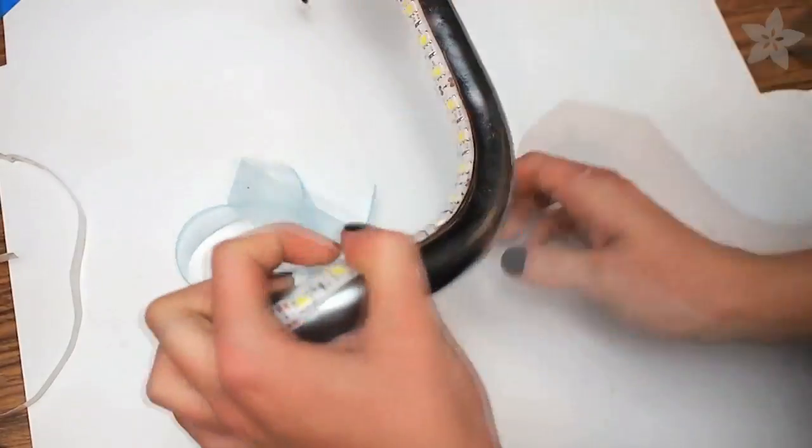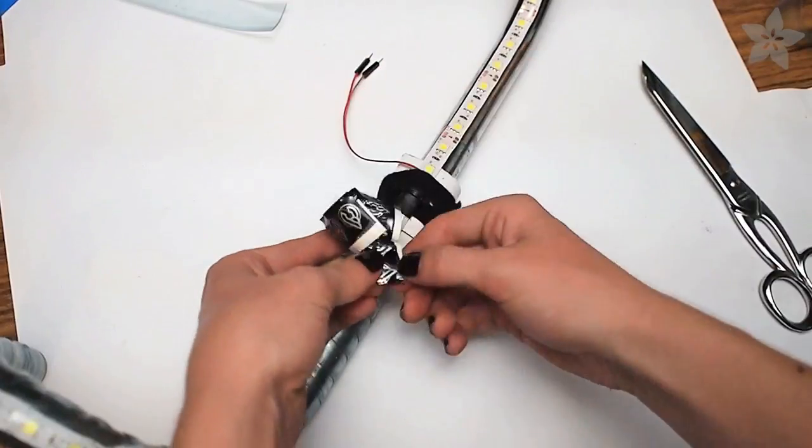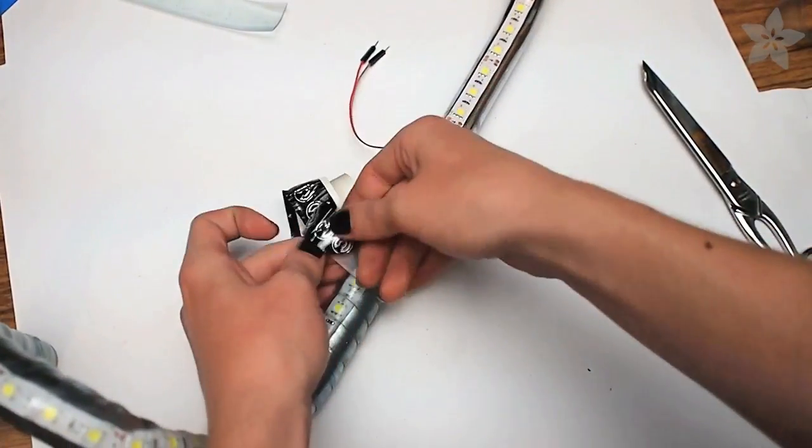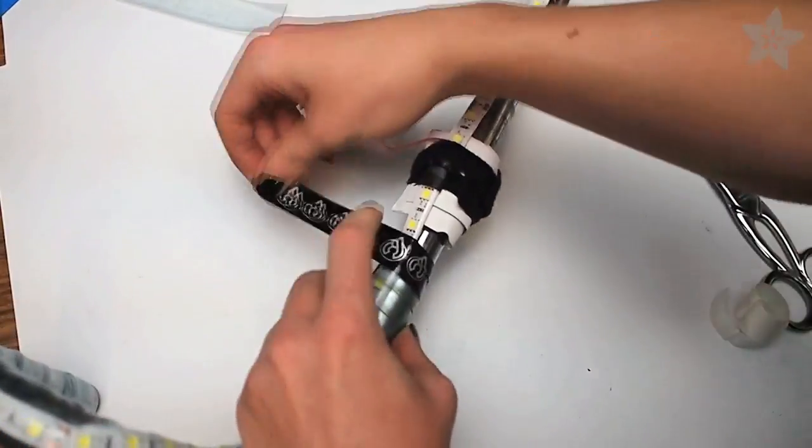Start at the ends of your bars and work towards the center. When you get there, cut off any extra and tape up the joint with the tape included or some black electrical tape. I also added a zip tie here to make it extra strong.